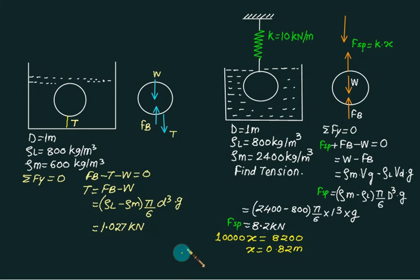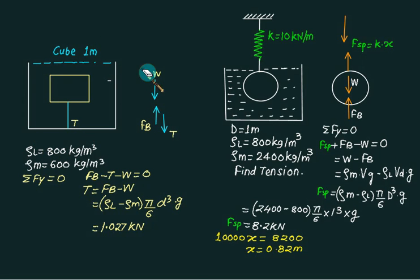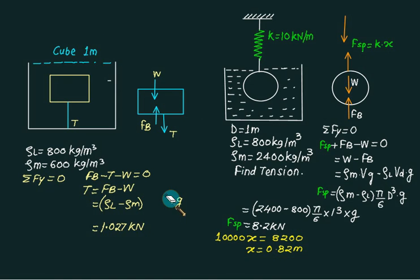Suppose we replace the sphere with a cube of side 1 m, with the same densities. We can again find the tension in the cable. The FBD and governing equation remain the same; only the volume changes to a³ = 1³ = 1 m³. Substituting all values gives a new tension of approximately 1.962 kN.